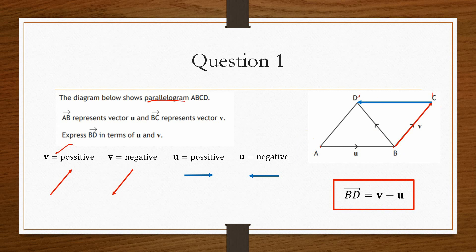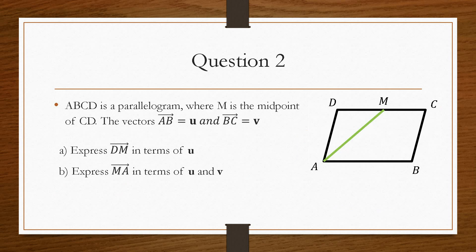So that's the theory and idea behind how you would interpret these types of diagrams. Now let's add an extra element to this, with the general idea remaining exactly the same. Again, we have a parallelogram of a, b, c, and d, but this time we have the point m, which is the midpoint of cd. We're told that vector ab — this length here — is u, and vector bc — this one here — is v. We need to express dm in terms of u, and then express ma in terms of u and v.